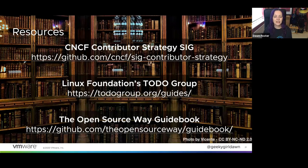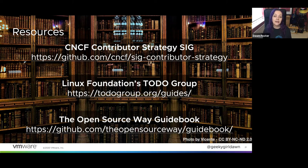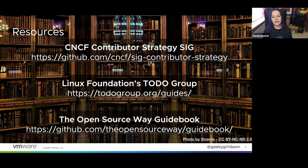Before I wrap up, let me leave you with a few resources. The CNCF Contributor Strategy SIG has a governance working group and a contributor growth working group that provide guidance about contributor experience, sustainability, governance, and openness to help CNCF projects develop strategies for maintaining project health. The to-do group has a bunch of guides with great info on all aspects of creating and managing open source projects. The OpenSourceWay guidebook has an entire chapter on governance, along with loads of other details about all kinds of open source topics. These are all great starting places for evaluating your risks.